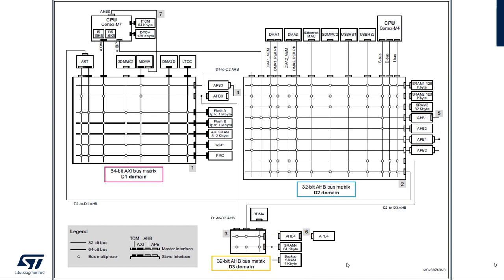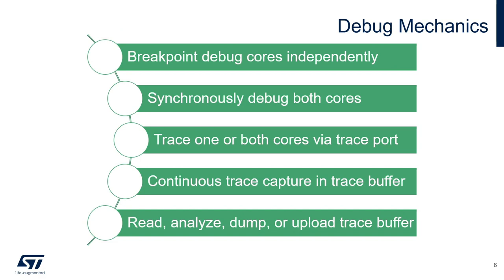Now let's dive into more detail about how these access ports tie into the overall debug mechanics. Both cores can be simultaneously and independently debugged using equipment connected to the JTAG or serial wire debug port. This allows for breakpoint and watchpoint setting, code stepping, memory access, and so on. Also, when one core stops due to a breakpoint or debugger stop command, the other core can be stopped as well. The cores can be restarted at the same time, allowing for debugging of loosely coupled applications which require the processors to remain synchronized.